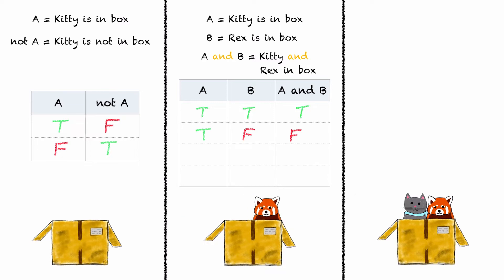Now consider the case where only Rex is playing inside the box. Statement A becomes false and statement B becomes true again. Just as in the last case, because one of the two is missing from the box and one statement is false, the conjunction of A and B must be false. The last case is covered if Rex leaves the box as well — both Rex and Kitty are missing, hence both statements A and B are false, and the combined proposition is also false.